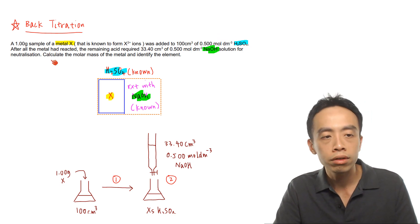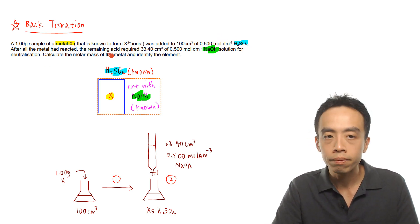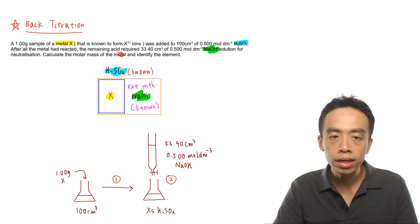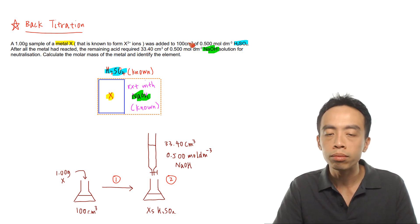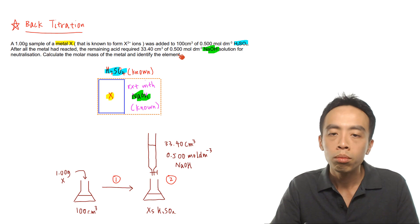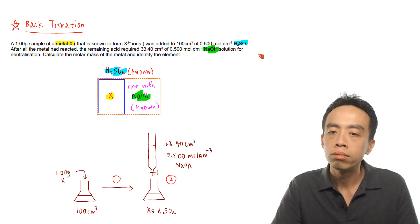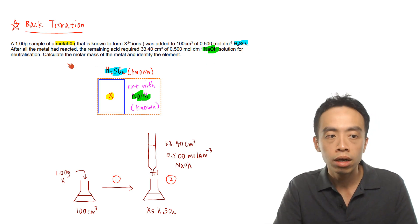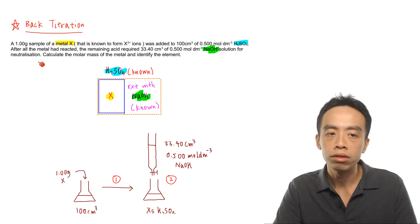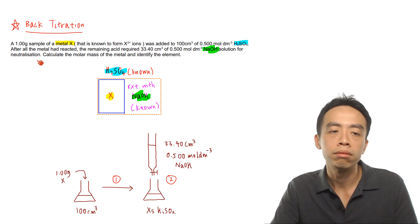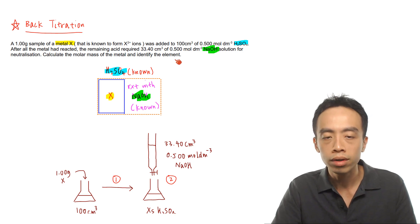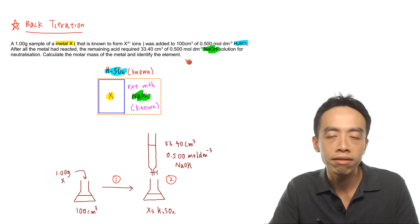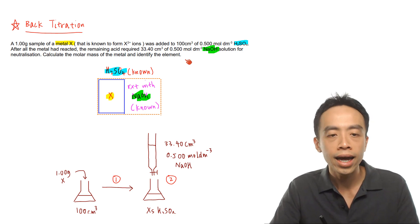After all the acid had reacted, the remaining acid required 33.40 cm³ of 0.5 mol per dm³ sodium hydroxide for neutralisation. The question wants us to determine the molar mass of the metal and identify the element.